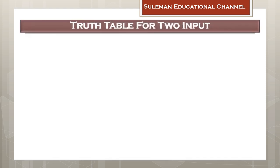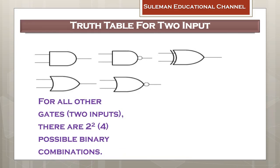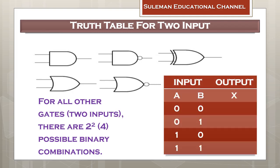All the other logic gates take two inputs, therefore 2 to the power of 2 equals four possible combinations. As you can see in the table, A and B are the inputs whereas X is the output. The first combination is A equals zero and B equals zero. The second is A equals zero and B equals one. The third is A equals one and B equals zero. The fourth combination is A equals one and B equals one.